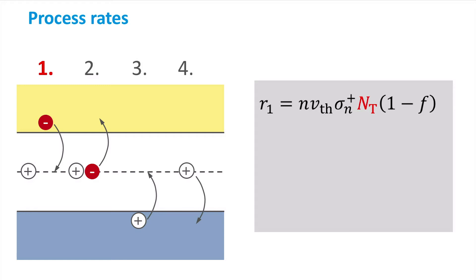which is incorporated by the trap occupancy of electrons f. This means that 1 minus f is the trap vacancy of electrons, so the probability that a trap is not occupied by an electron.